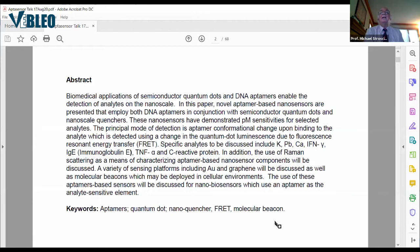These aptamer-based nanosensors, for many analytes we're trying to detect, we get into the picomolar sensitivity, 10 to the minus 12 of a mole. Examples of our targets are ions, potassium, lead, calcium, IFN gamma, which is present in immune reactions, an antibody IgE, TNF-alpha, C-reactive protein. These are just examples. We also do Raman studies of these analytes, as well as to determine the Raman signatures of the aptamers.